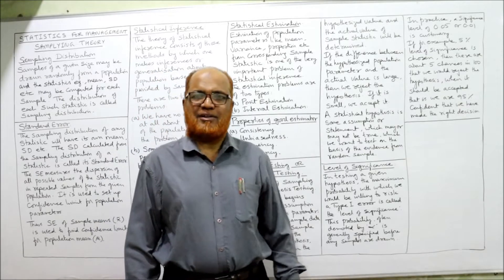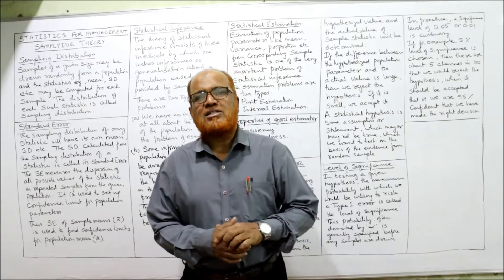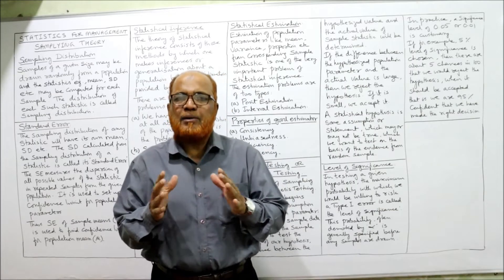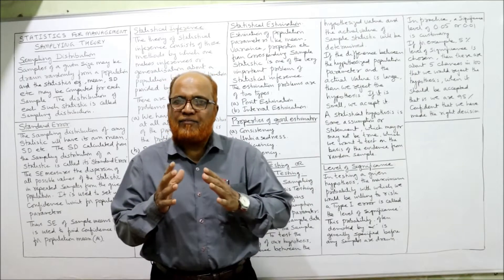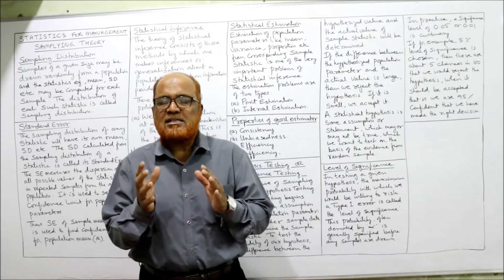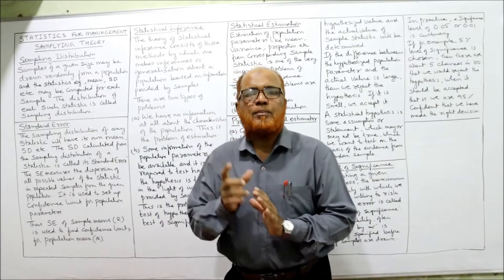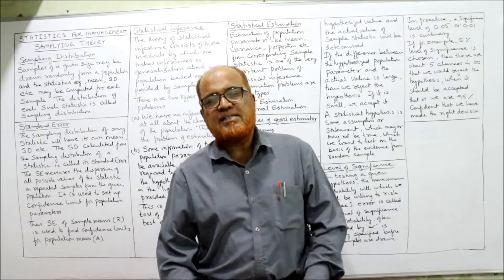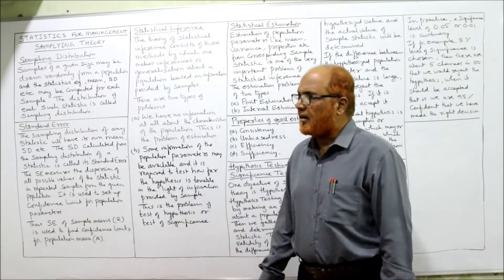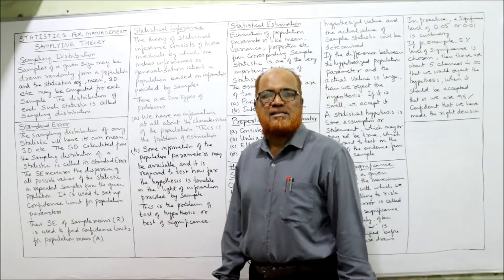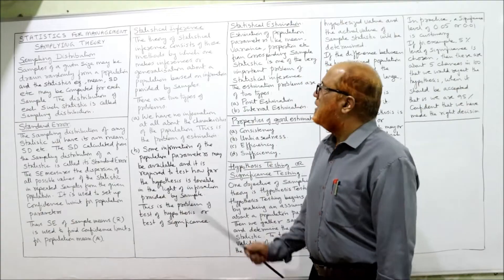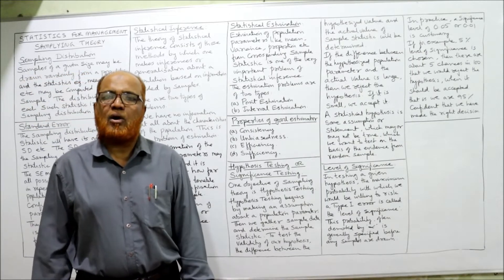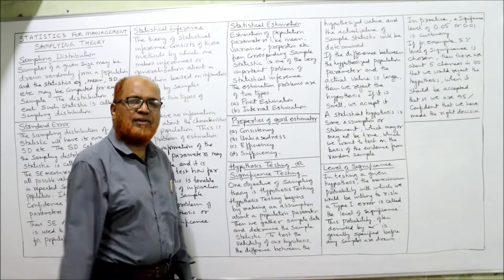Hello viewers, welcome to my channel. I'm Hashem Ali Khan. This is the continuation of the last video on sampling theory. In the last video I explained the basics of sampling, sampling procedure, parameter and statistic, different methods of samples, and determination of sample size. In this video I'm going to discuss sampling distribution, standard error, statistical inferences — point estimation and interval estimation — properties of a good estimator, and hypothesis testing or level of significance.